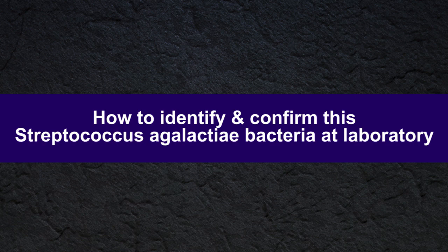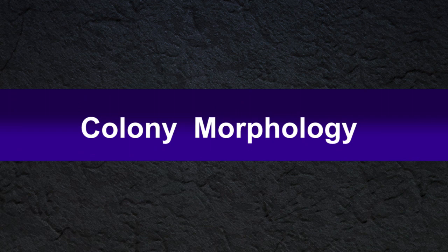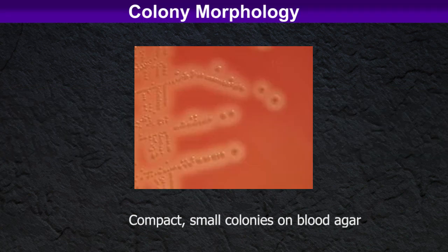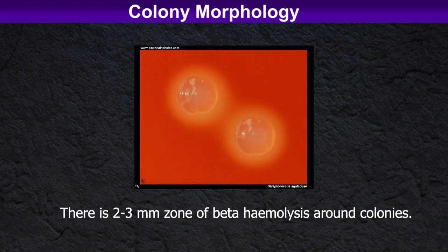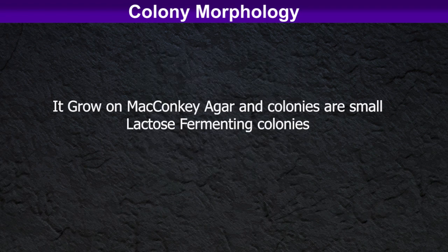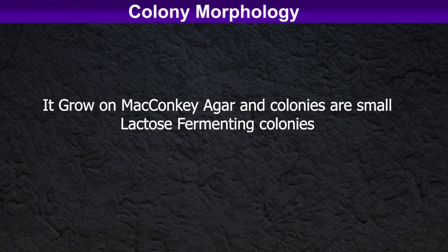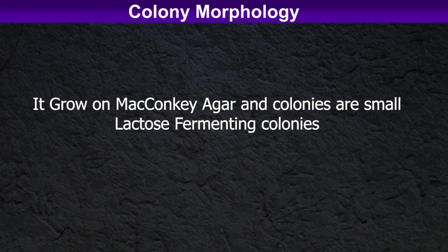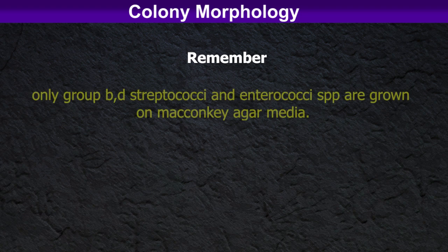Let's see how to identify and confirm Streptococcus agalactiae in the laboratory. When we consider colony morphology, Streptococcus agalactiae produces compact, small colonies on blood agar. There is also a two to three millimeter zone of beta-hemolysis around the colonies. It grows on MacConkey agar and colonies are small lactose-fermenting colonies. Remember, only group B Streptococcus and Enterococcus species can grow on MacConkey agar media.